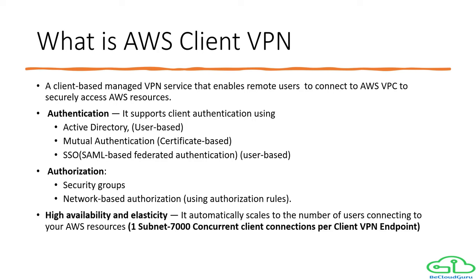AWS Client VPN service is highly available and elastic — it will automatically scale to the number of users. It can support up to 7,000 users per subnet. If you associate one subnet it supports 7,000 concurrent users, and if you add two subnets the number of concurrent users can be increased to 16,500. The scaling happens on its own, so you don't need to worry about managing the backend.